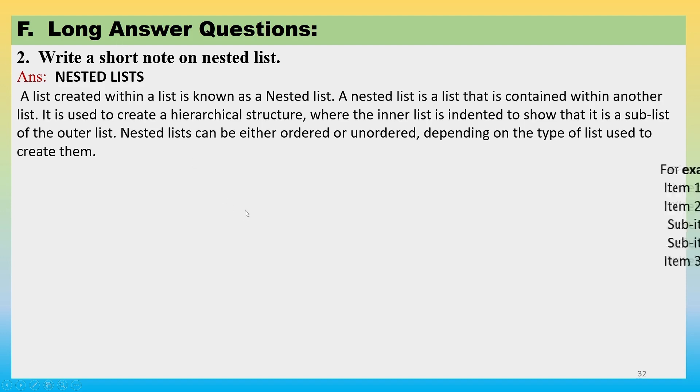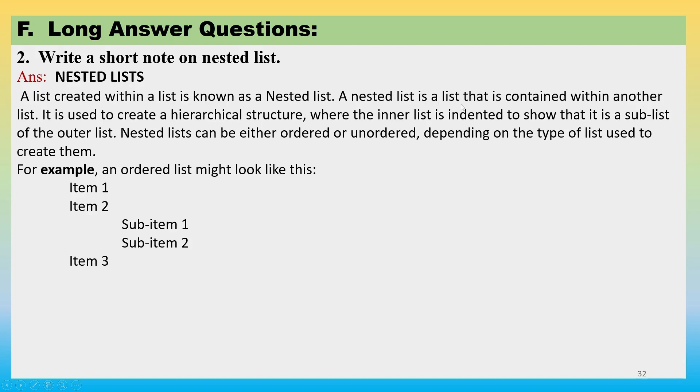Nested lists: a list created within a list is called nested list. A nested list is a list that is contained within another list. This is the explanation of first line. It is used to create a hierarchical structure where the inner list is indented to show that it is a sub-list of the outer list. Nested list can be either ordered or unordered or a combination of both depending on the type of list used to create them. For example, an ordered list might look like this: item 1, item 2, and under item 2 I have 2 items, and then I can have item 3.